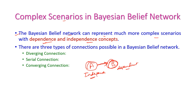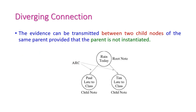Now, how will the independence and dependence concept be explained in this Bayesian belief network? Here we have three different connections: diverging connection, serial connection, and converging connection. Let us see these things one by one. The first one is diverging connection.